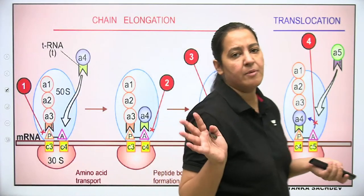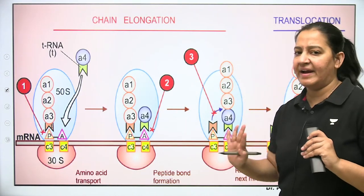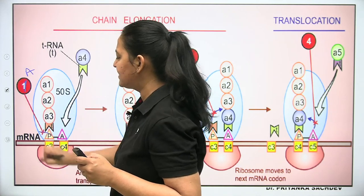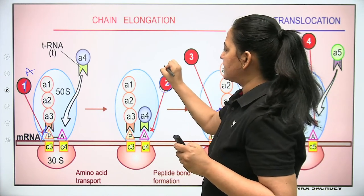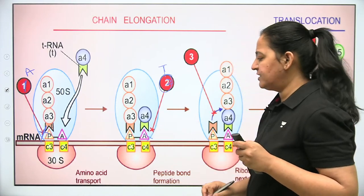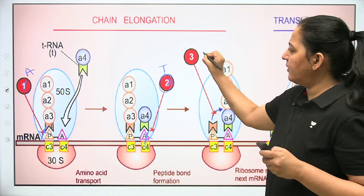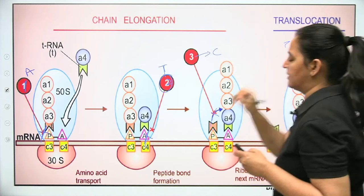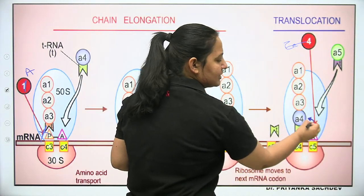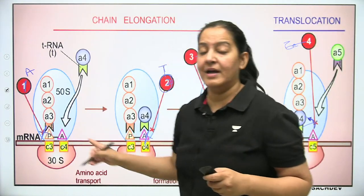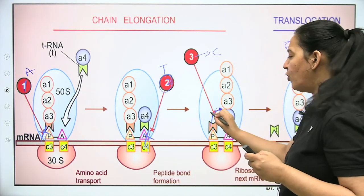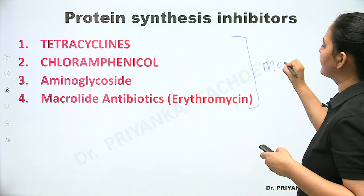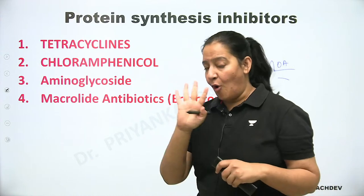In summary, the four steps have four antibiotics each inhibiting one step. If asked which step tetracycline inhibits — it is Step 2, inhibiting the A window. Aminoglycoside inhibits Step 1 (P window, initiation). Chloramphenicol inhibits Step 3 (P to A shift). Erythromycin/macrolide inhibits Step 4 (translocation, A to P shift). Now I request all students to make a comparative table while watching this lecture — take out your notebooks.